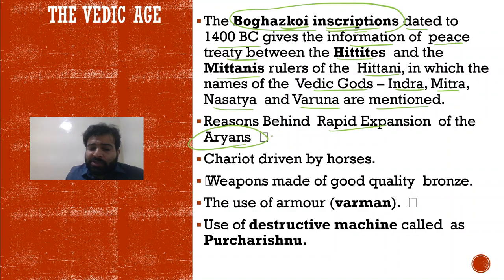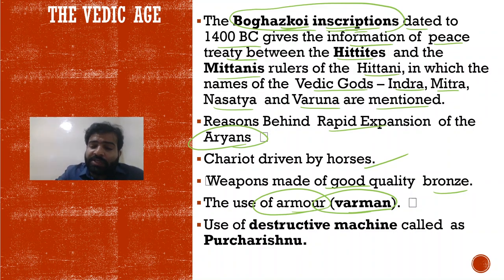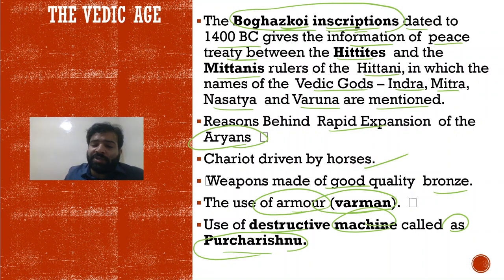The reason behind the rapid expansion of the Aryans was their use of chariots driven by horses. Their weapons were made of good quality bronze, and they used armor — the term for armor is 'Varman.' They also used a destructive machine called 'Purcharishnu.' Because of these advantages, their expansion became very fast.